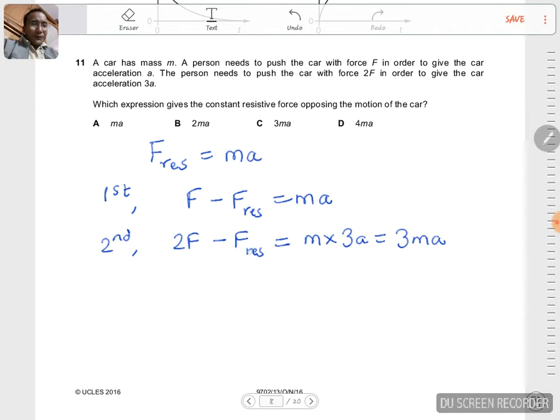you can multiply the first equation by 2, so 2F minus 2F_res equals 2MA. And when you subtract this equation from that, you will obtain F_res equals